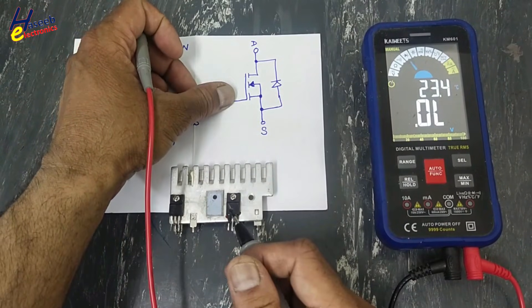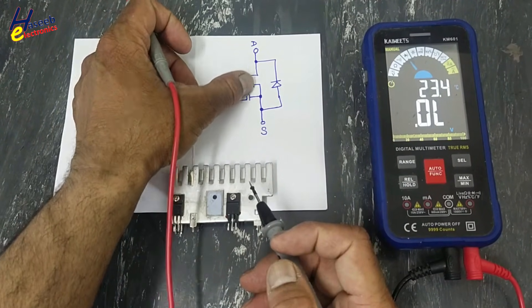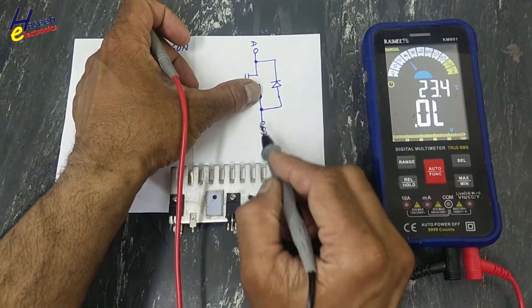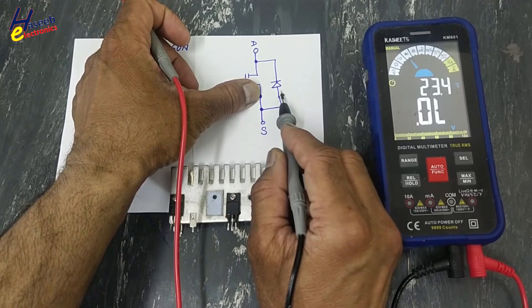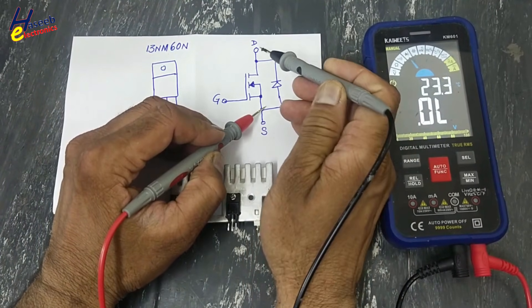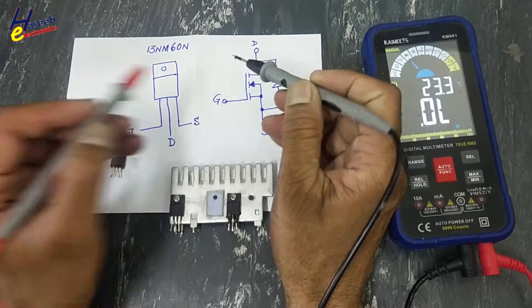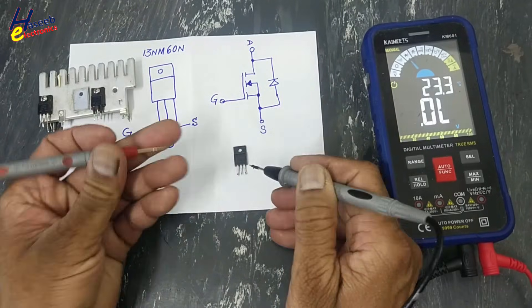When this gate is discharged, the channel will be off and the freewheeling diode will be tested in this direction between source and drain.